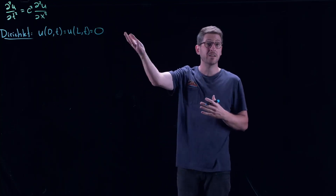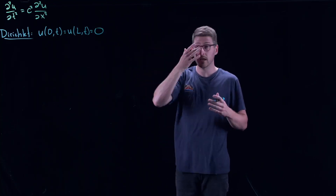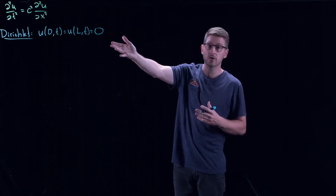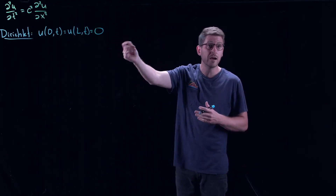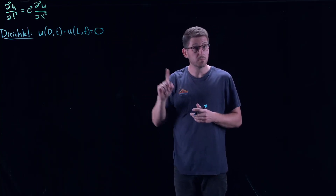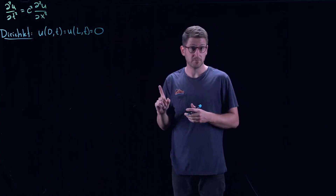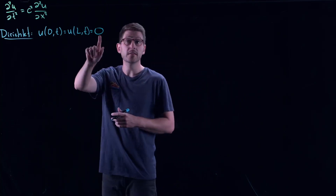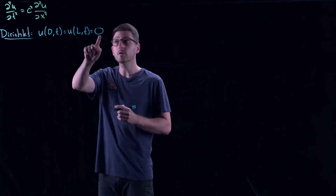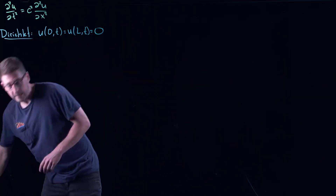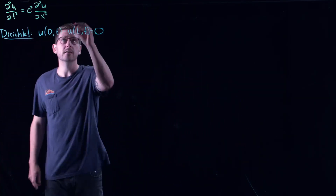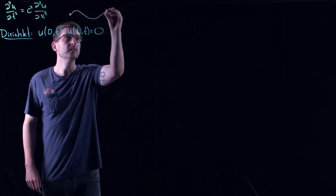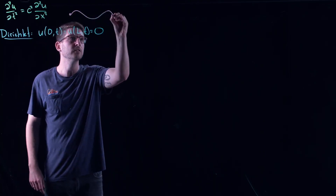Remember, with the heat equation, that meant fixing the temperature at the end points. But what does U describe now? U now describes the vertical displacement of the string. So what this says is that there is no vertical displacement of the string at either of the ends — these are pinned boundaries.